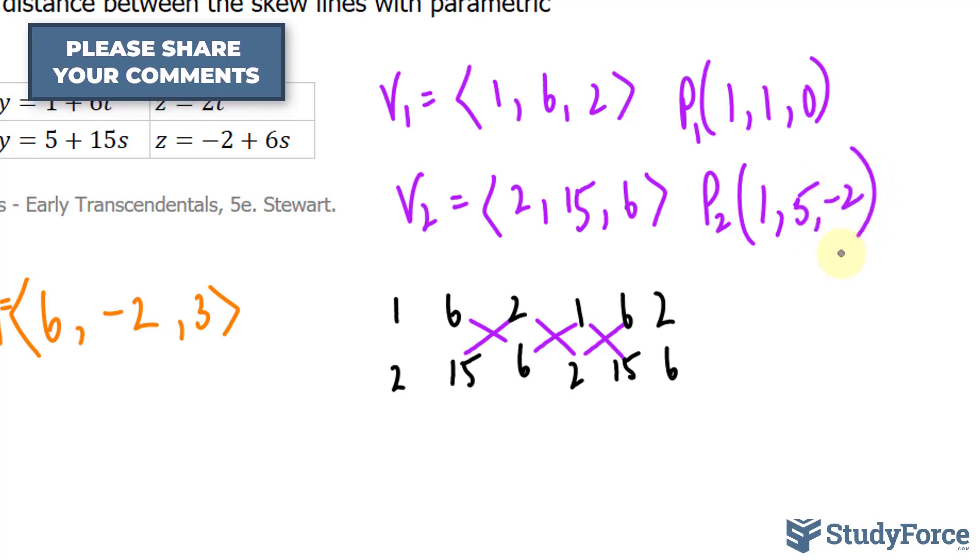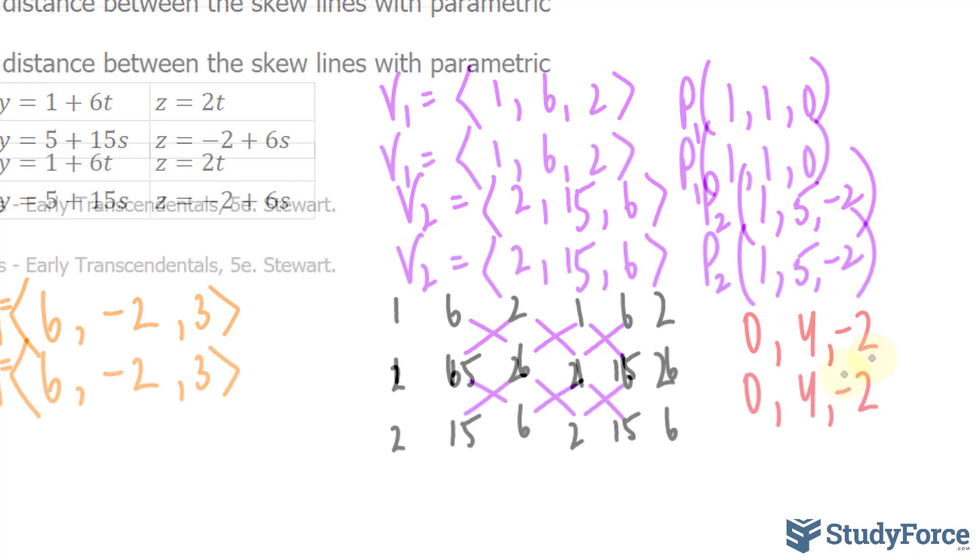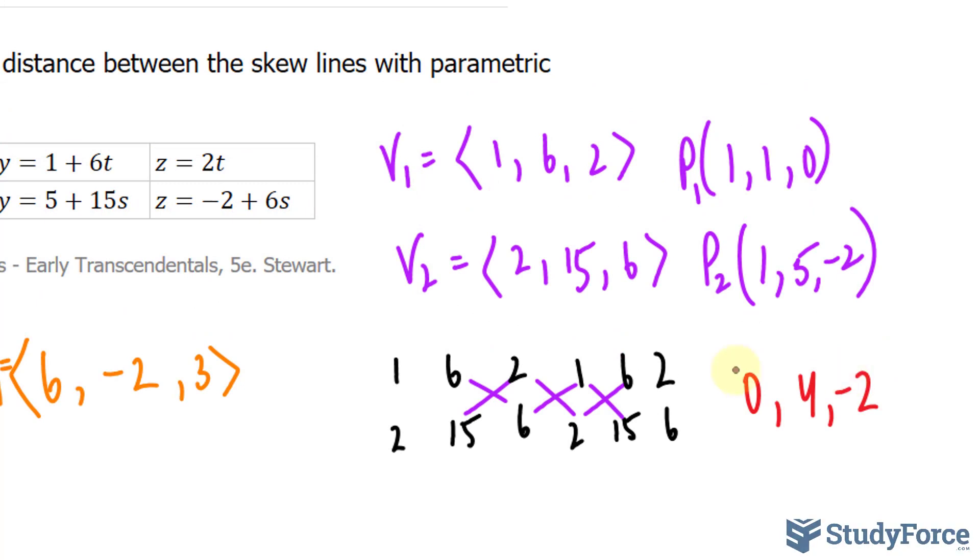I can easily come up with the distance between both of these points by subtracting the corresponding coordinates. So if I subtract 1 minus 1, I end up with 0, 5 minus 1 is 4, and negative 2 minus 0 is negative 2. And these numbers can represent a vector on their own. So the vector would have an x, y, and z component of 0, 4, and negative 2. I'll call this B, this vector.